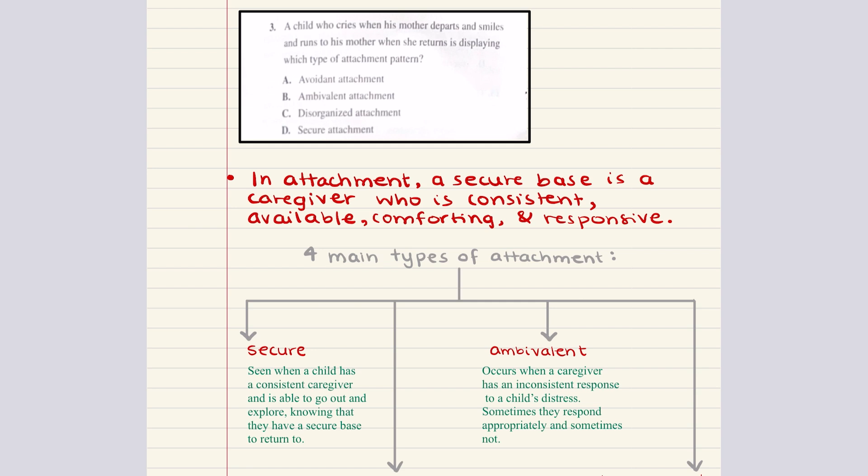So with that reminder, this problem says that this child cries when their mother leaves and they are super excited when the mother comes back. This attachment pattern is very much representative of a secure attachment, right? Because secure attachment is seen when a child has a consistent caregiver and they're able to go out and explore knowing that they have a secure base to return to. And so that means the child will be upset when the caregiver leaves and they will feel comfort when the caregiver returns, which is exactly what's being demonstrated in this problem. And so the correct answer here for three is going to be D.